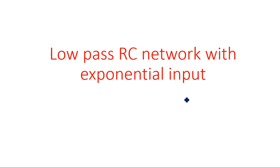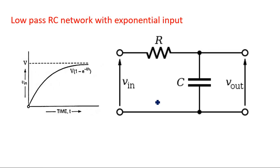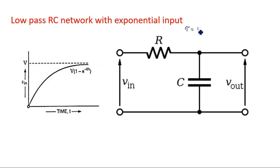In this video you are going to learn about the operation of a low-pass RC network with exponential input. We have seen different inputs in previous videos. This video explains how a low-pass RC network behaves when we have an exponential input with amplitude V into (1 minus e to the power minus t by tau), where tau is the time constant of the generator. The time constant of the circuit is different, which is RC.